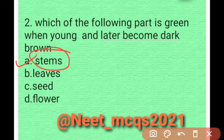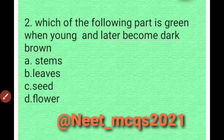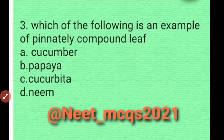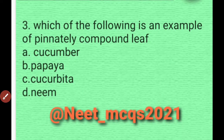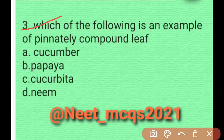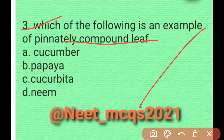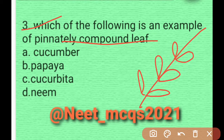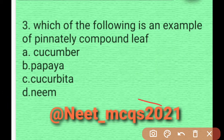Let's move on. Question 2: Which of the following is an example of a pinnately compound leaf? Pinnately compound leaves have a structure like this, and this type of structure is basically found in neem. So that option is correct.